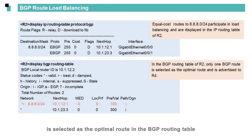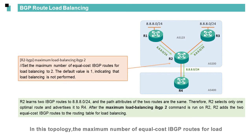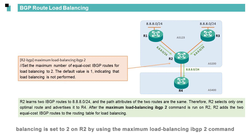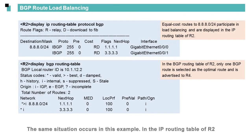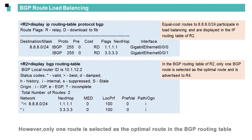However, only one route is selected as the optimal route in the BGP routing table. In another topology, the maximum number of equal cost IBGP routes for load balancing is set to 2 on R2 using the 'maximum load-balancing ibgp 2' command. Because the path attributes of the two routes are the same, the 'load-balancing as-path-ignore' command does not need to be run. In the IP routing table of R2, two routes to 8.8.8.0/24 are displayed, implementing load balancing, but only one route is selected as the optimal route in the BGP routing table.